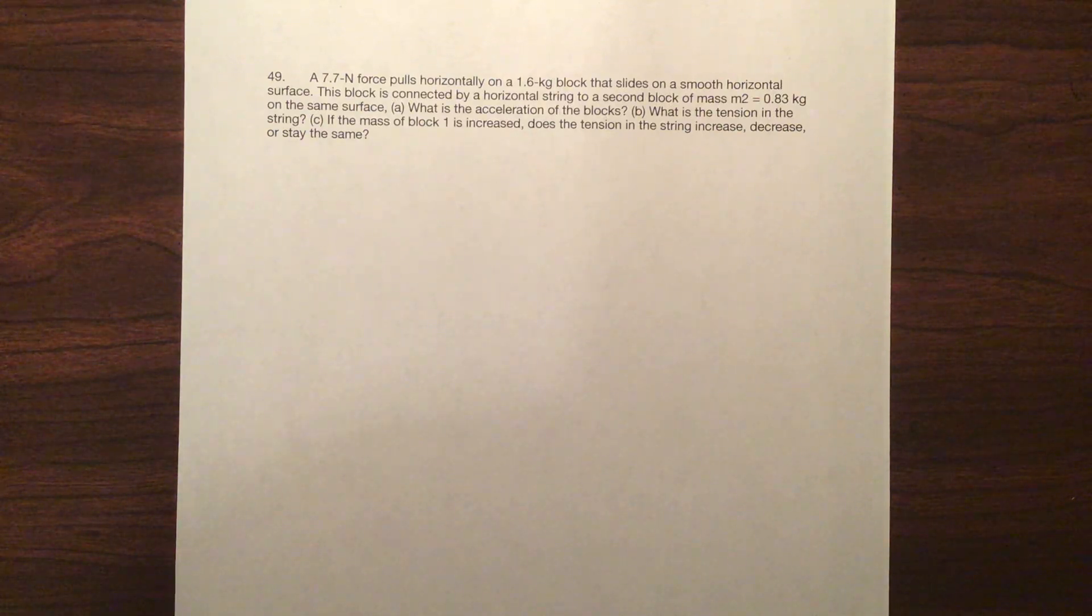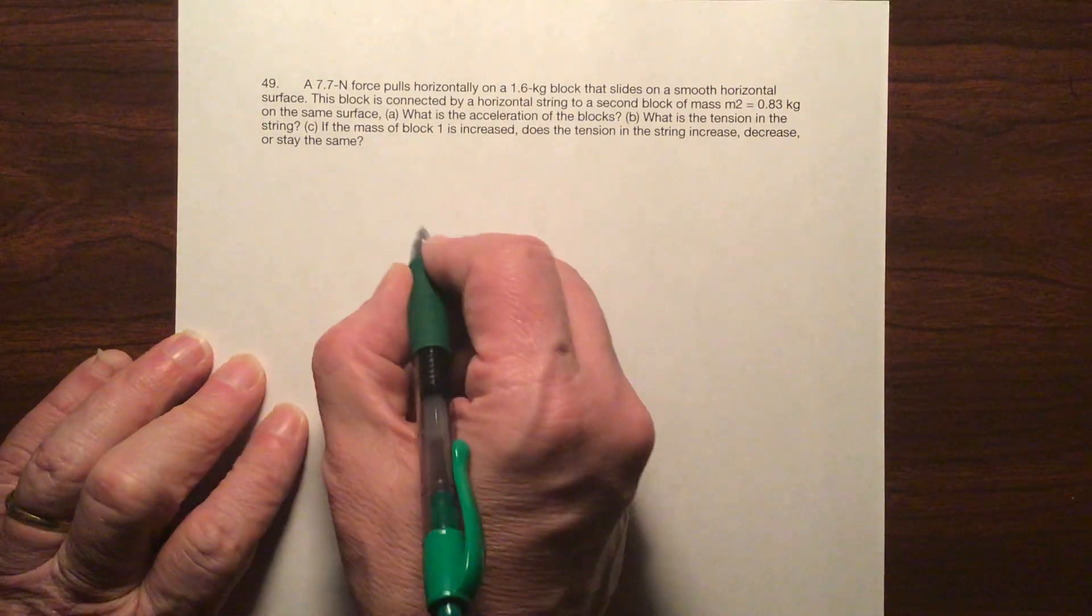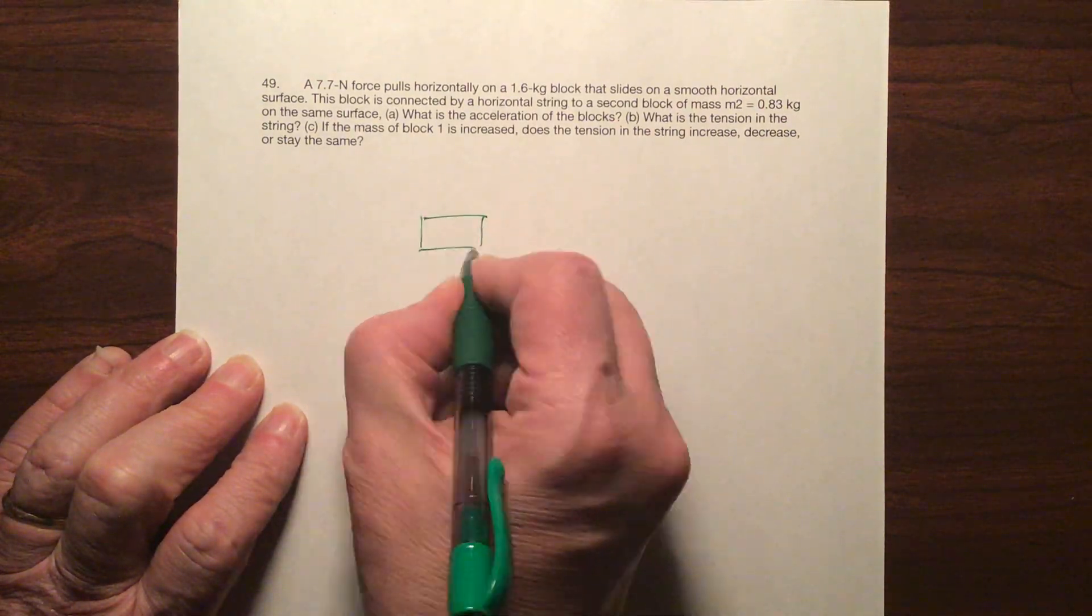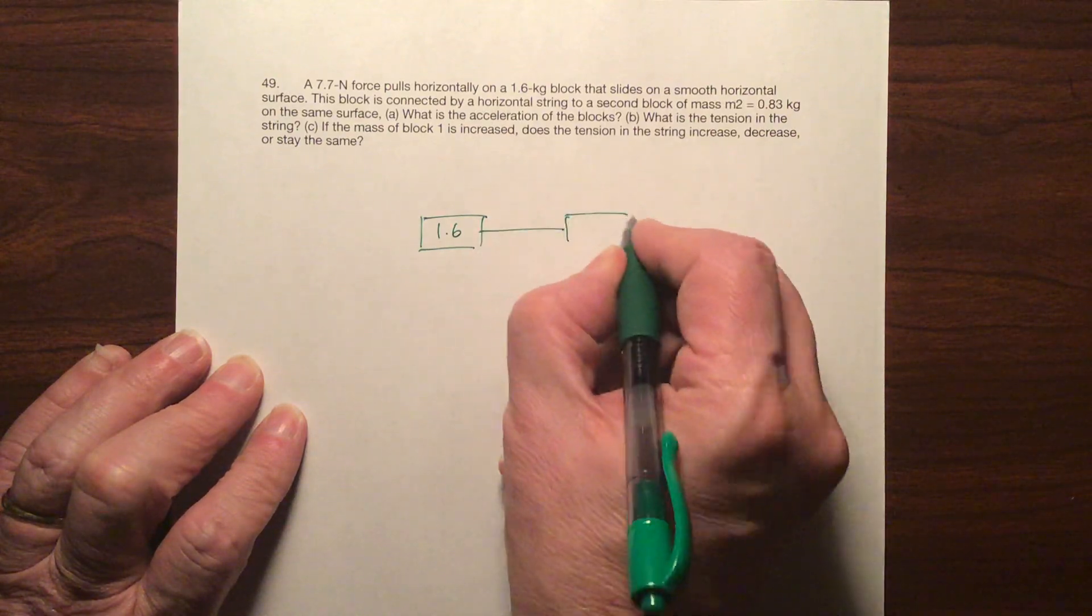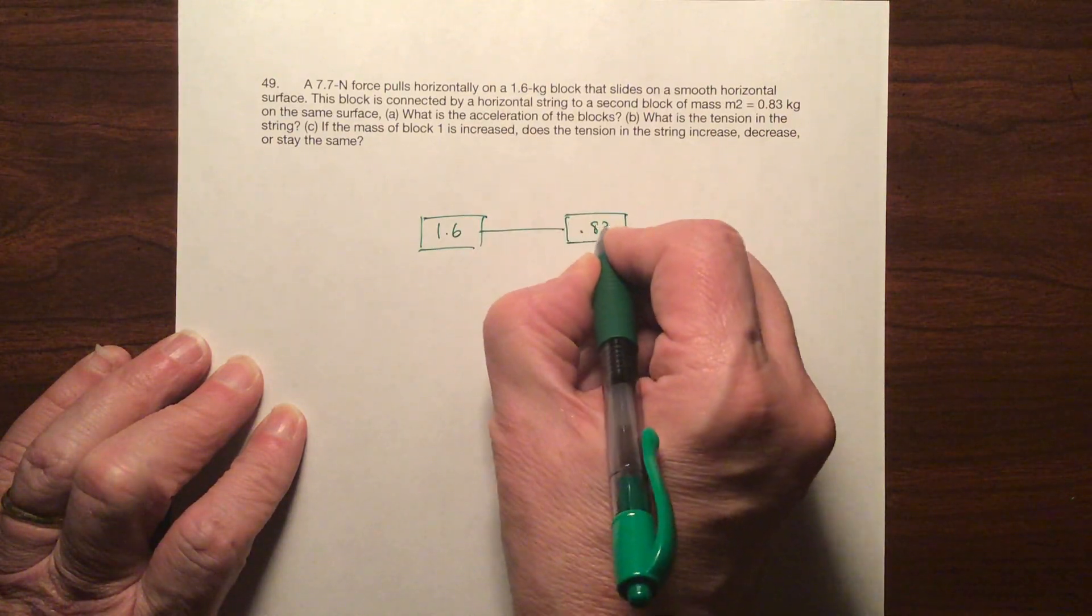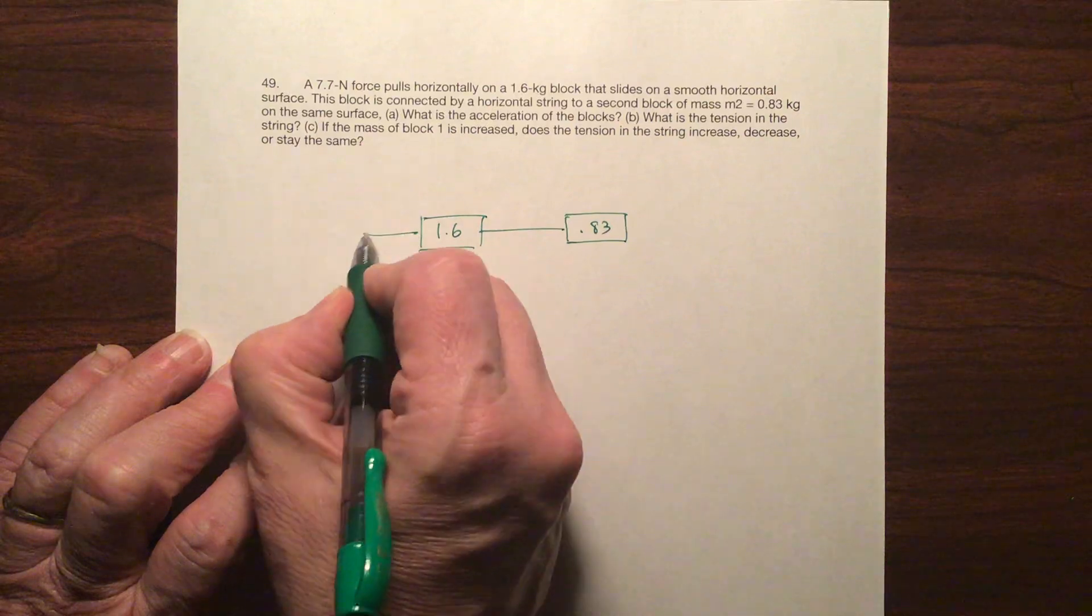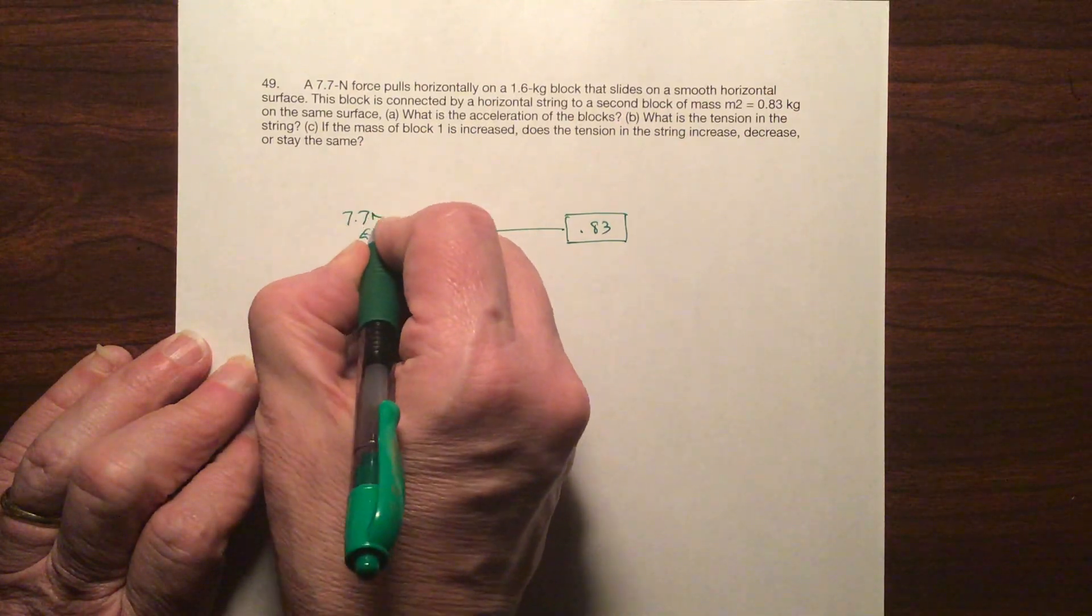You have 7.7 Newtons pulling horizontally on a 1.6 kilogram block. The block is connected horizontally to a second mass of 0.83. So we've got two boxes here, two blocks. One is 1.6 kilograms connected to 0.83 kilograms and then I have a force on that of 7.7 Newtons.